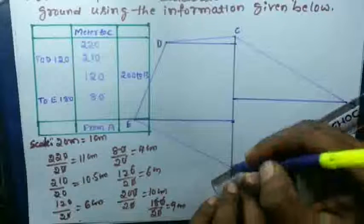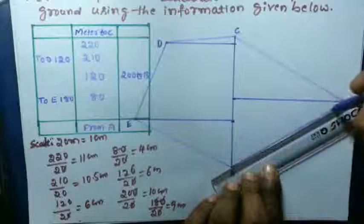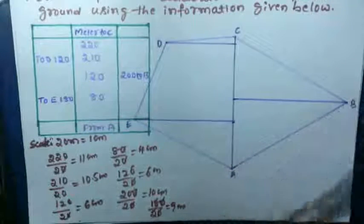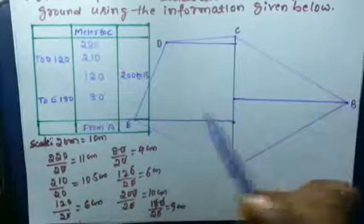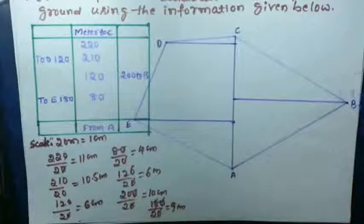Then you will get a plane of the drawing. This diagram, if you write this diagram, you will get two marks.